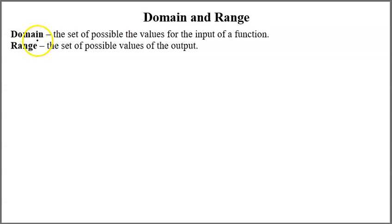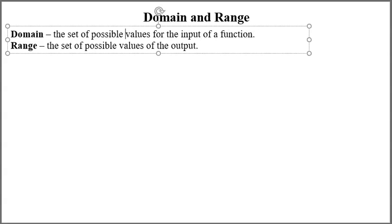The domain is the set of possible values for the input of the function. So an input is usually X, and we want to be able to describe every value of X that can be put into the function without something funky happening.